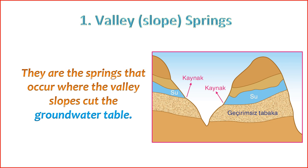8. Human Use — historically, valley slope springs have been used as water sources for human communities. People may have built settlements near these springs to access freshwater for drinking, agriculture, and other domestic purposes. 9. Hydrogeological Considerations — hydrogeologists study the hydrogeological conditions of valley slope springs to understand the movement of groundwater in the subsurface and to assess the sustainability of these springs as water sources.